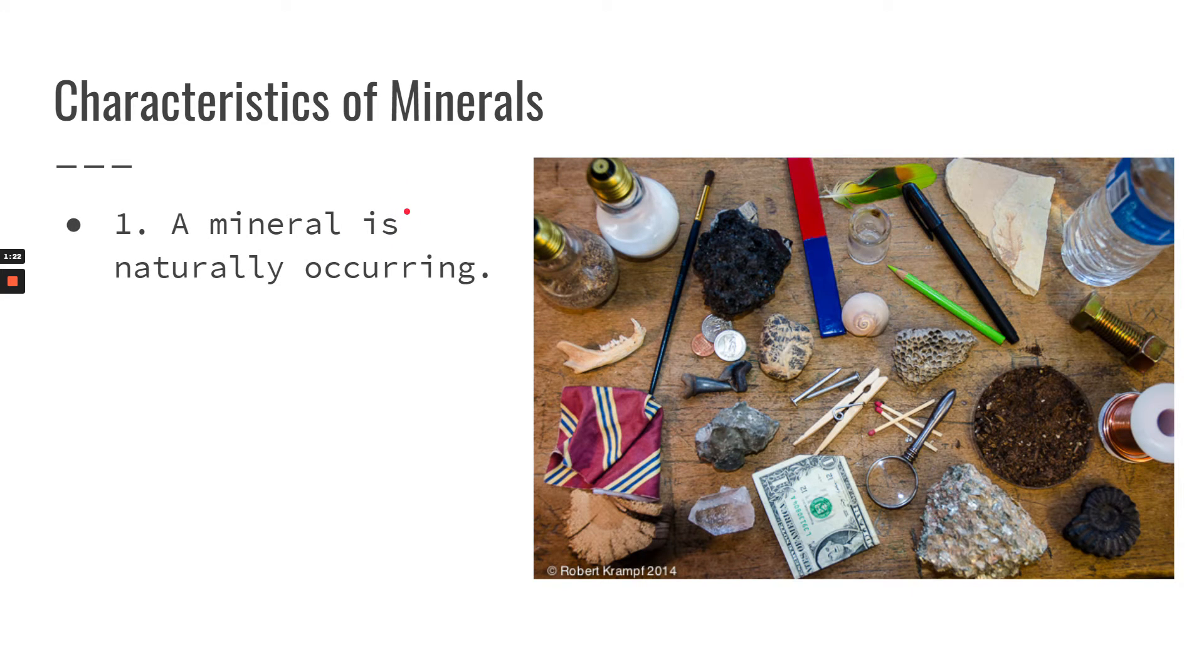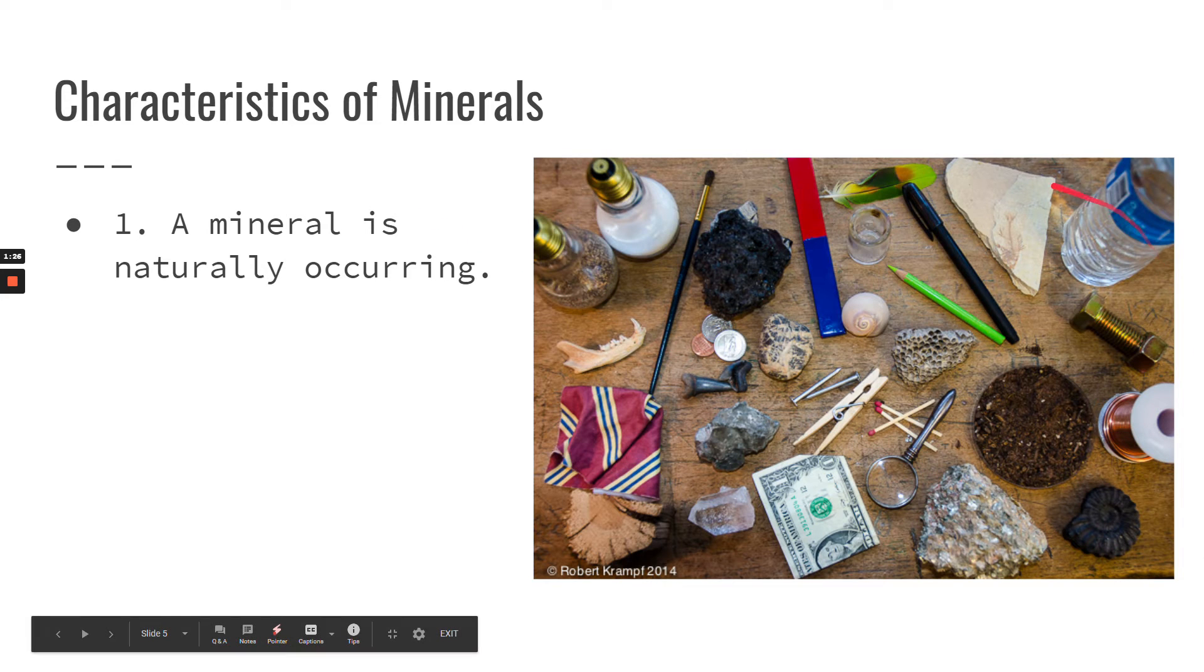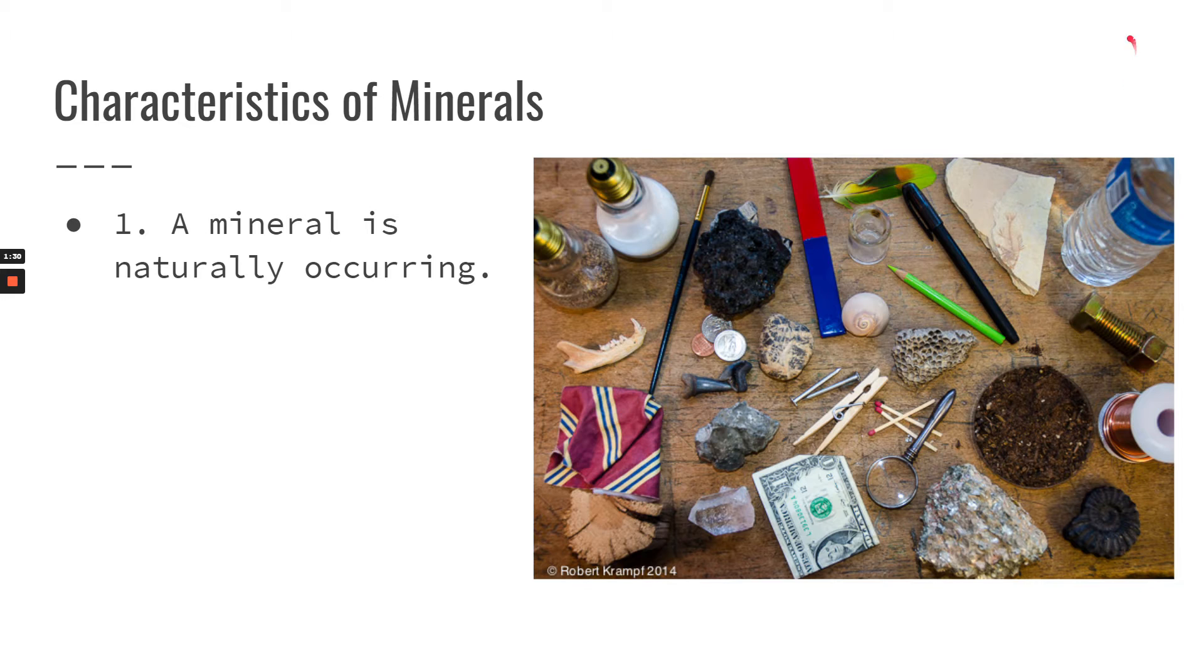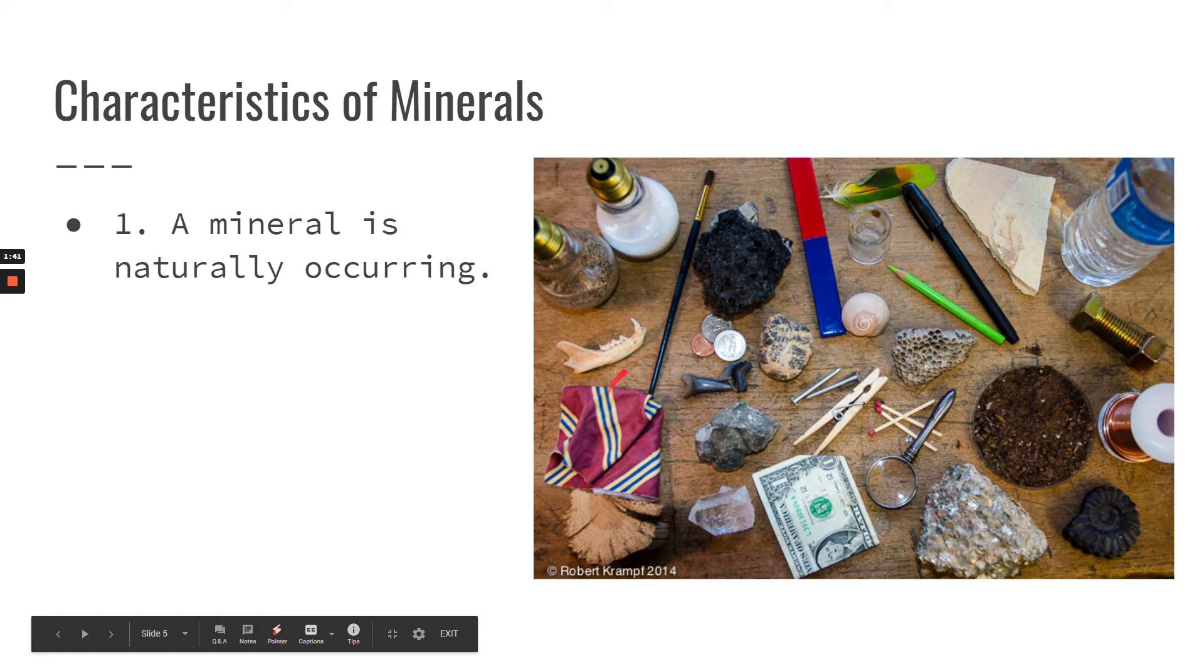First one is a mineral is naturally occurring. That means that they're not man-made. So if we look at the image here, we have a lot of different objects. Things that would be naturally occurring would be things like a feather, a shell, a rock, another shell, wood, a jawbone. All of those are naturally occurring.